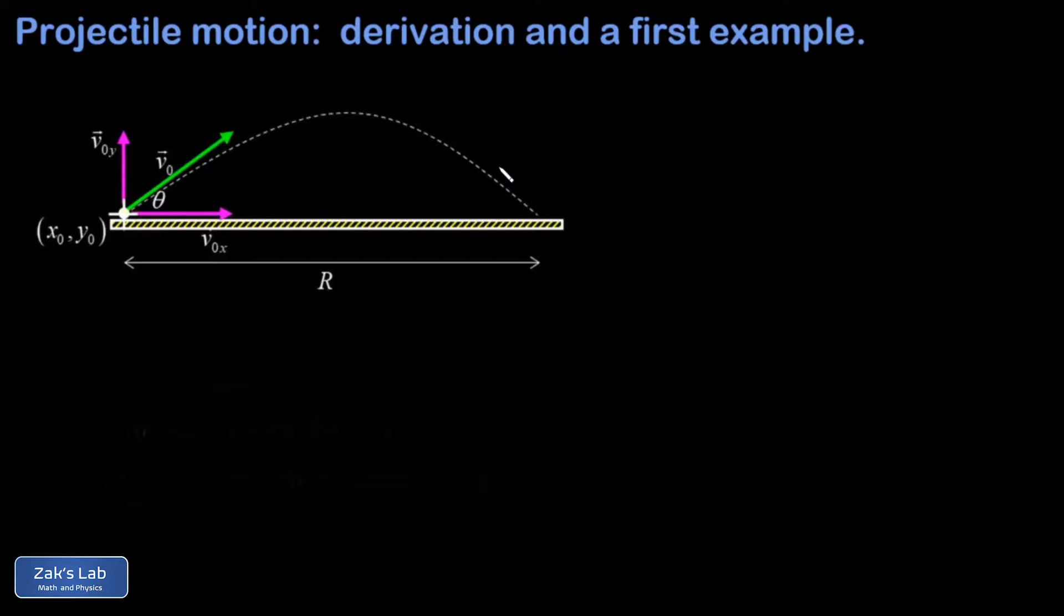What we mean by projectile motion is the two-dimensional motion of an object experiencing only the force of gravity. We ignore drag forces for simplicity here, and that force of gravity is always pointing straight down. So at any moment in time for the flight of this object, the force of gravity points straight down, inducing an acceleration straight down, and I'll call that a_y for the moment.